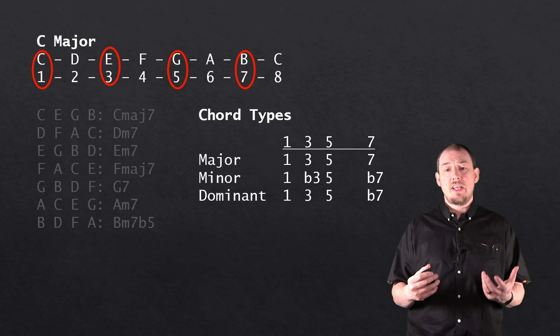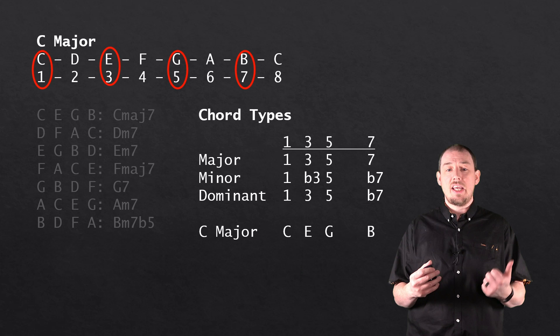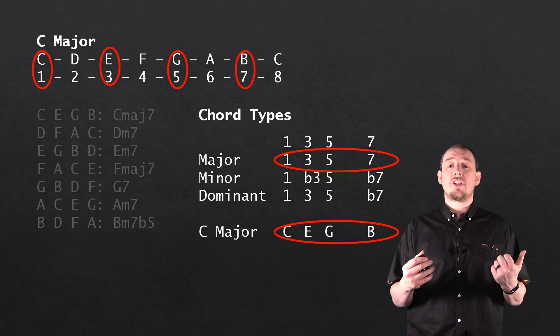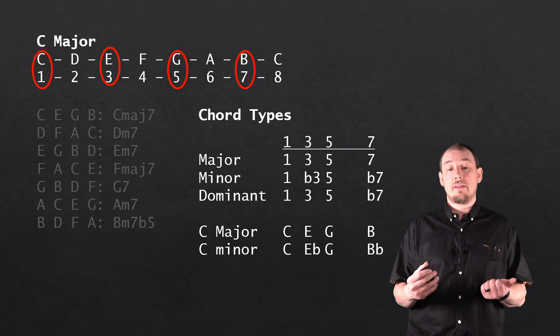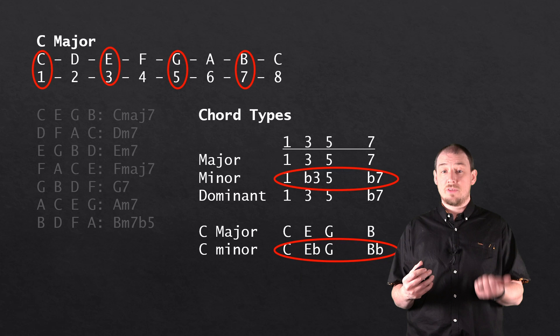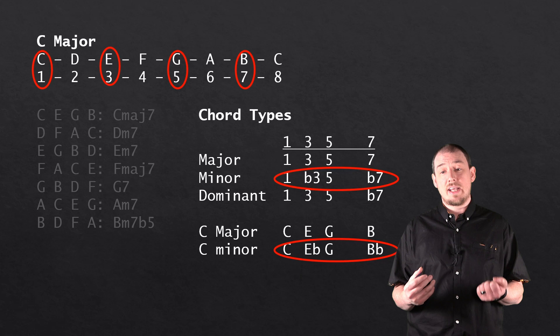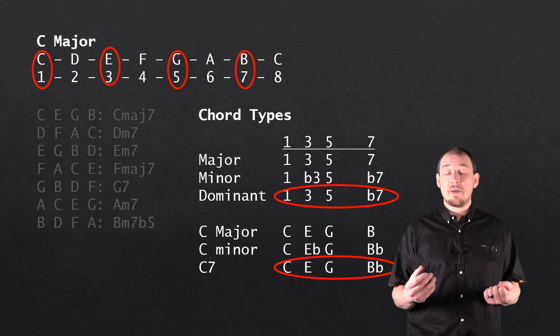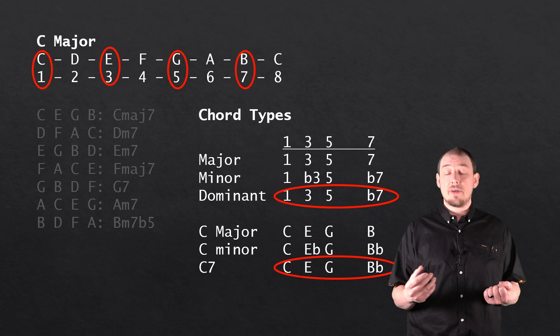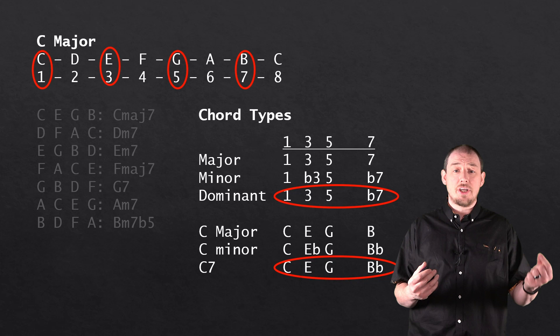Applying this in the context of C: for C major we take 1, 3, 5 and 7, giving us C, E, G and B — played together that's a C major 7 chord. For C minor we take 1, 3, 5 and 7 but flatten the third so E becomes E flat, and flatten the seventh so B becomes B flat — giving us C minor 7. For the dominant we take 1, 3, 5 and flat 7 and get a C dominant seventh chord — it has C, E and G just like the major, but also B flat which tells us it's dominant.